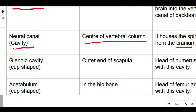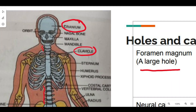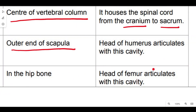The glenoid cavity is a cup-shaped cavity located on the outer edge of the scapula, which is part of the pectoral girdle. The scapula is the triangular bone present close to the clavicle. The head of the humerus articulates with this glenoid cavity.